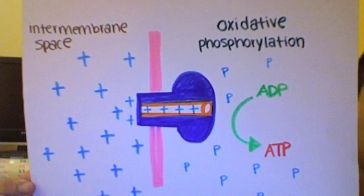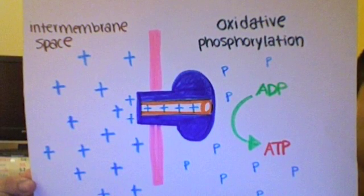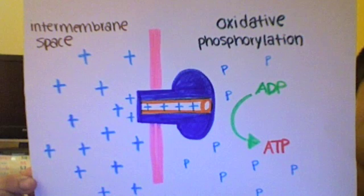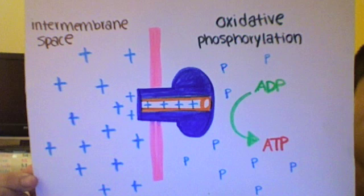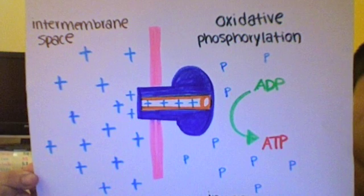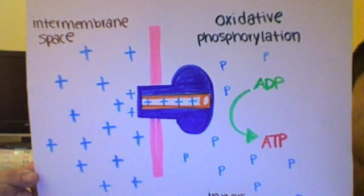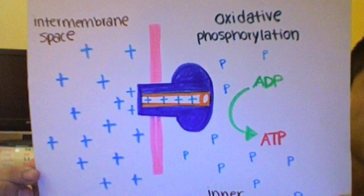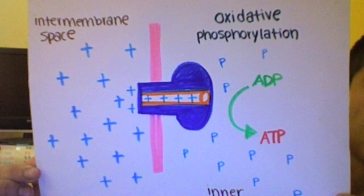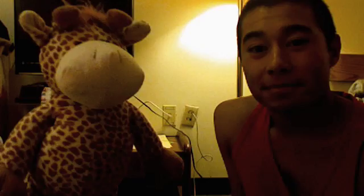When the inner membrane reaches a pH of 5, the ATP synthase opens up a tube allowing for passive transport of protons into the inner matrix. The force of protons rushing through ATP synthase creates the energy to phosphorylate ADP into ATP, which is known as oxidative phosphorylation. So through the process of aerobic respiration, our body creates ATP, which is energy.